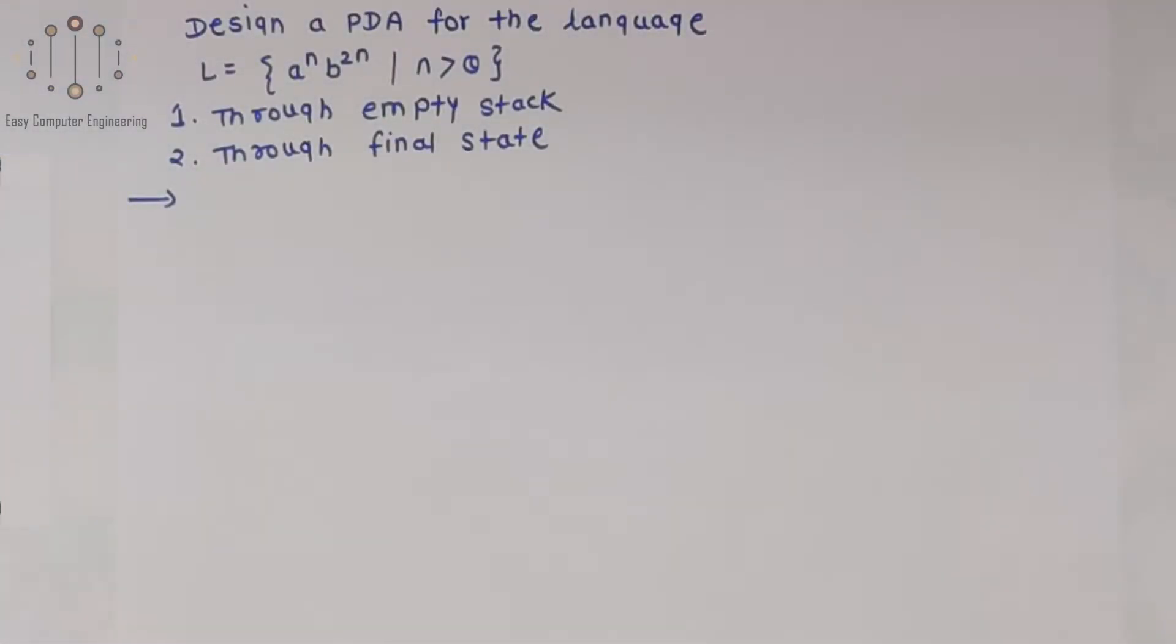Hello friends, in this video we will see how to design a pushdown automata for the language L equals A raised to N B raised to 2N where N is greater than zero.